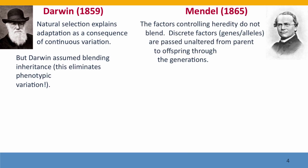At the same time, the problem posed by blending inheritance was being solved, although no one realised it at the time. It was being solved by Mendel, the first real geneticist. One extremely important finding that Mendel made was that the factors that control heredity do not blend — that discrete factors, what we now call alleles, are passed unaltered from parent to offspring through the generations.